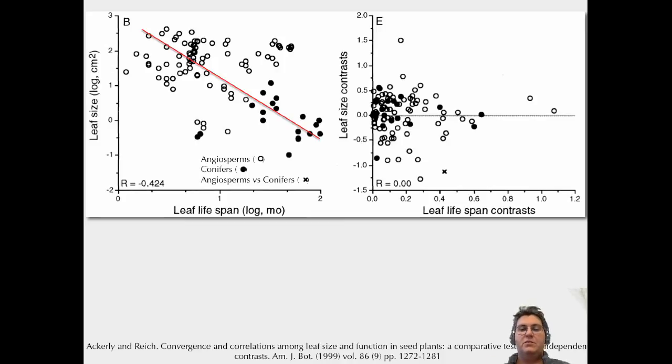Once you remove that correlation due to history, you find out there's no actual correlation. Other times you remove correlations due to history, you find there's still correlation, or reverse direction of correlation. But without that, you sort of over-counted these changes, and so you get the wrong answer. That's just one divergence there, that X between angiosperms and conifers.